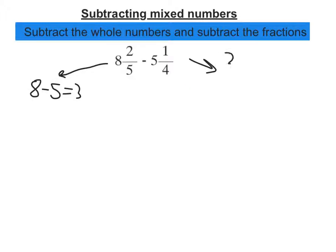And then I'm going to subtract the fractions. 2 fifths and a quarter. So I'm looking for the lowest common denominator of 5 and 4. So the first number that appears in both their times table is 20.